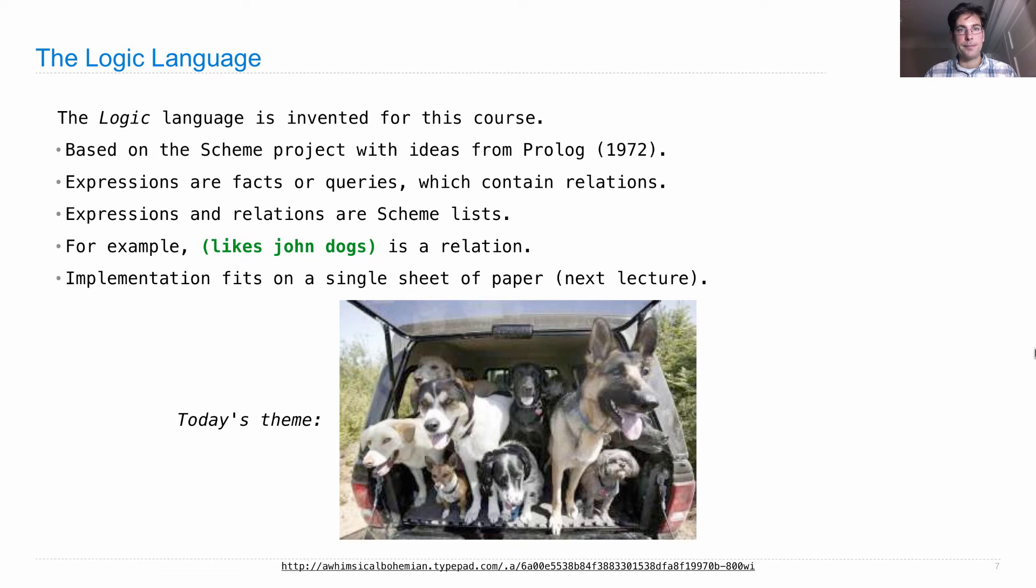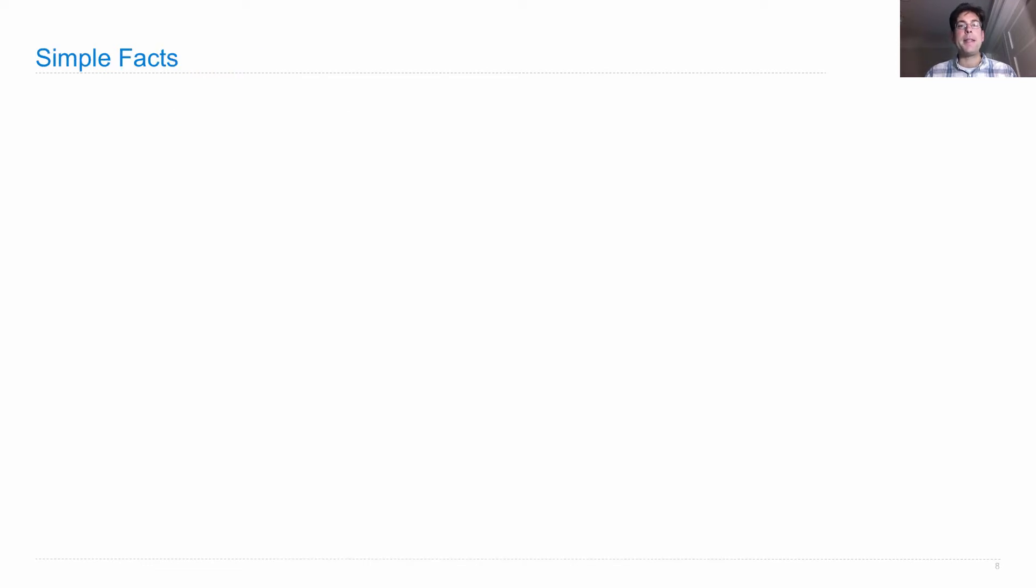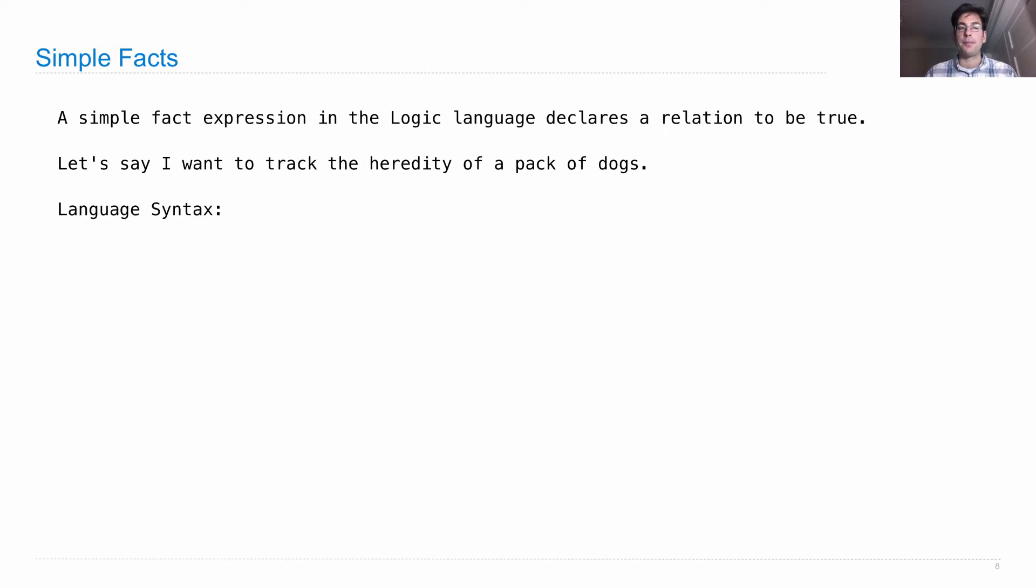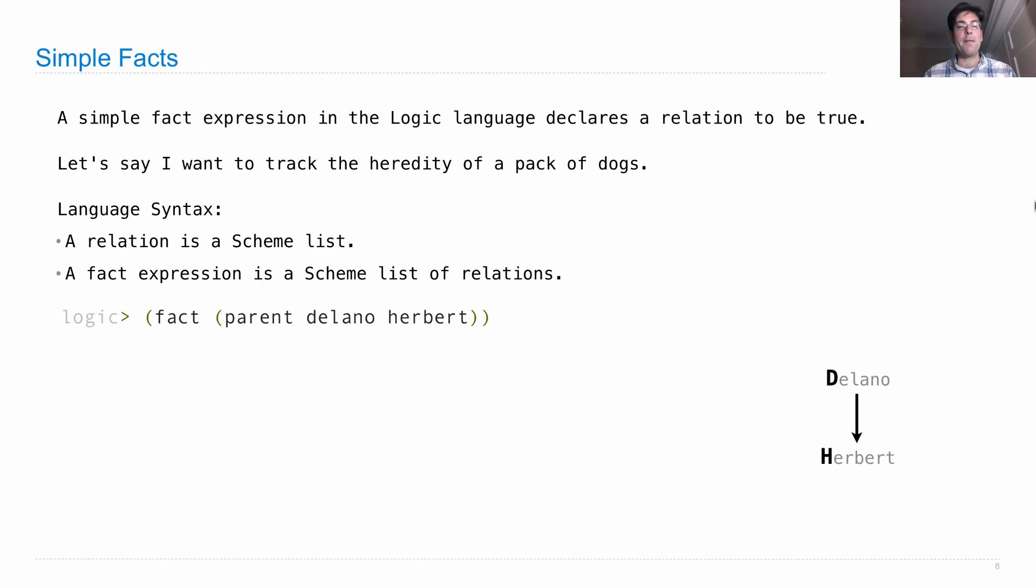Here are the pieces of the Logic language. We'll start with simple facts. A simple fact expression in the Logic language declares a relation to be true. Let's say I want to track the heredity of a pack of dogs. I write down a relation as a Scheme list and a fact expression as a Scheme list of relations. I could say that there is a parent relation between Delano and Herbert.